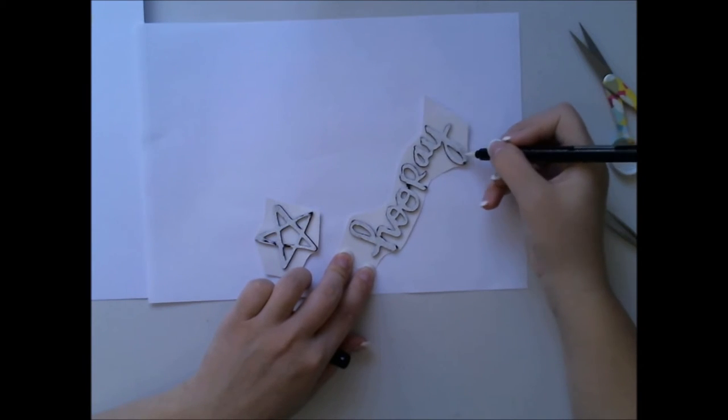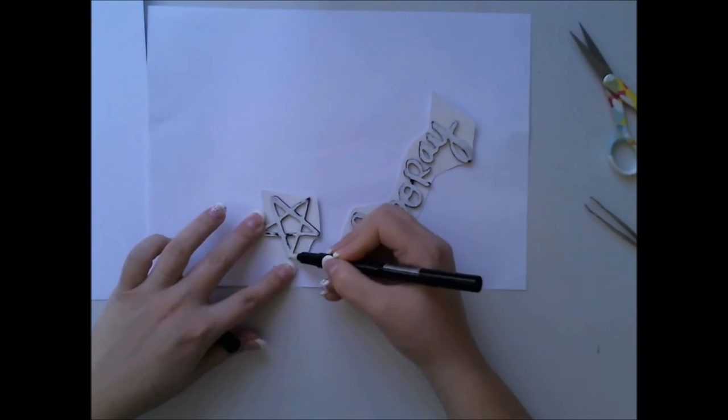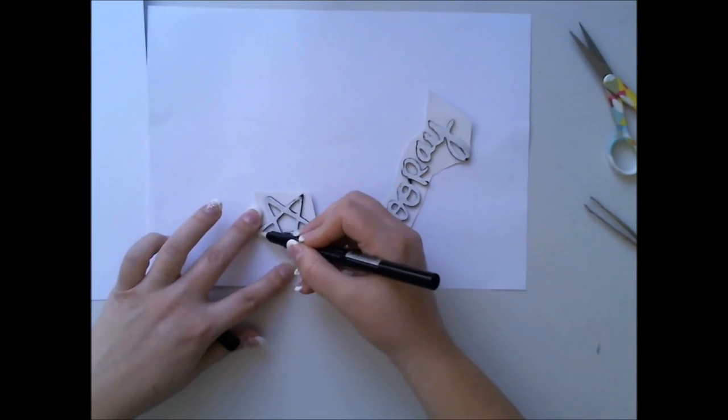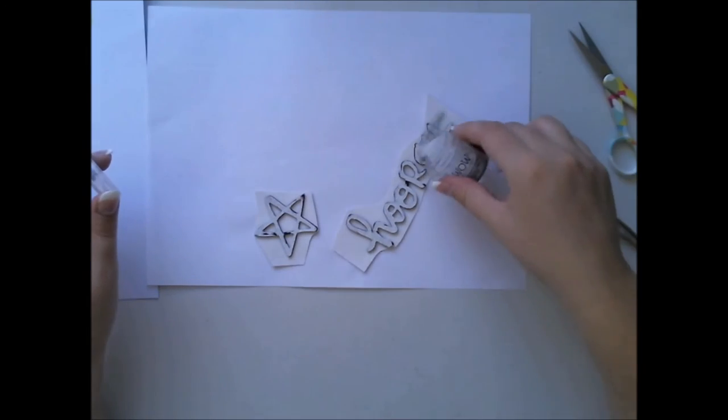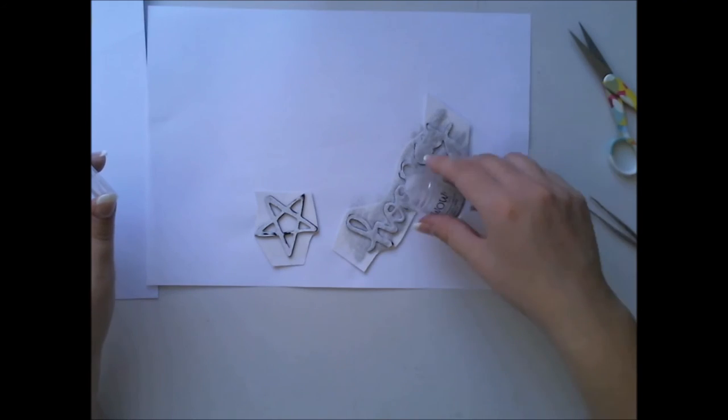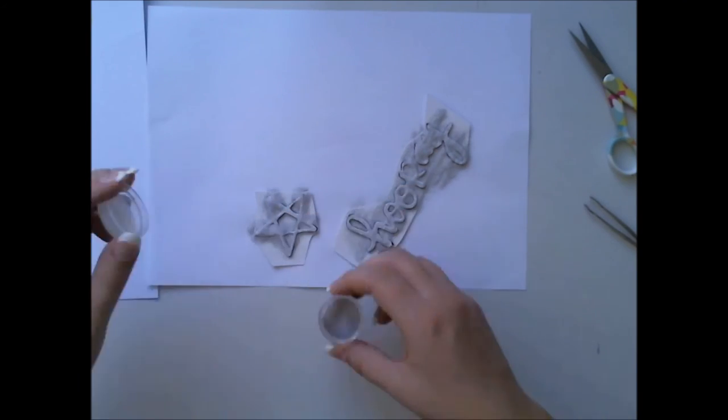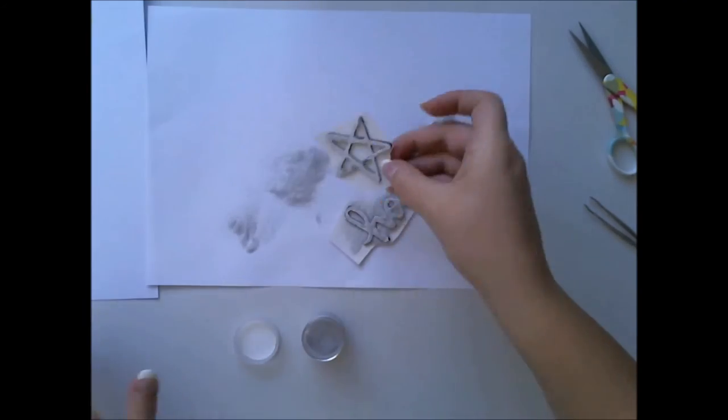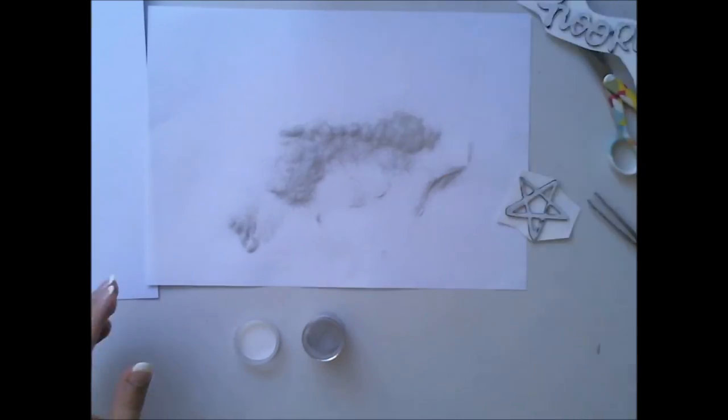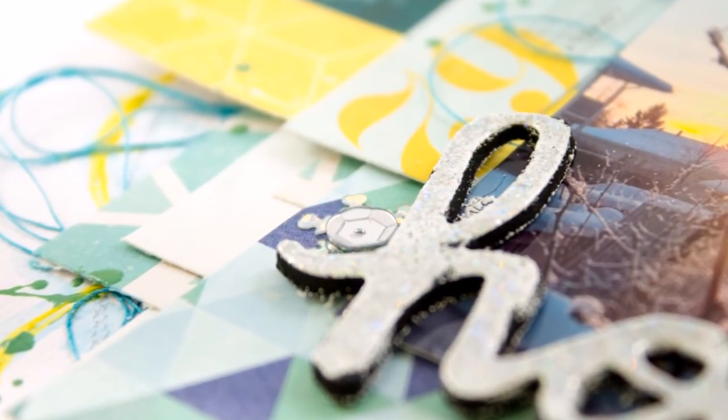You can also use some white embossing powder which already has the sheen in it but I wanted to do it this way because the outcome is a bit different this way than with only one layer of embossing powder.